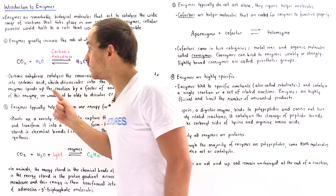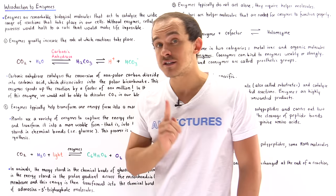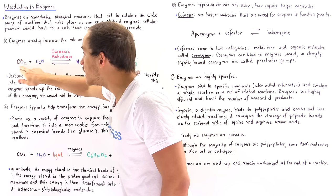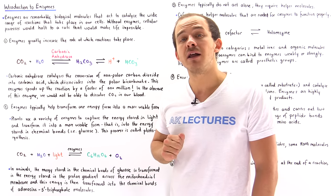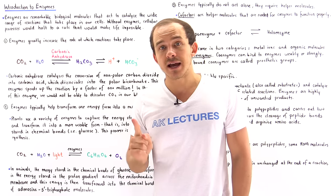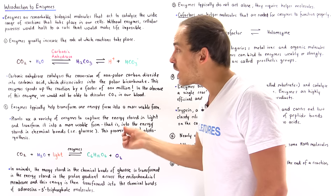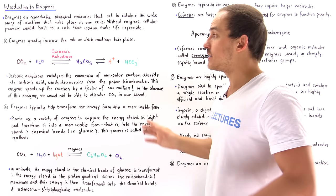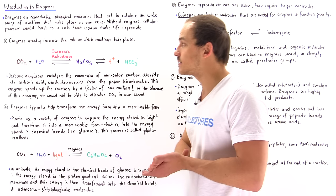Now carbonic anhydrase is a very efficient, very effective enzyme like most enzymes are. In fact, this enzyme can transform 1 million of these carbon dioxide molecules every single second. So it increases the rate by 1 million compared to its uncatalyzed form.